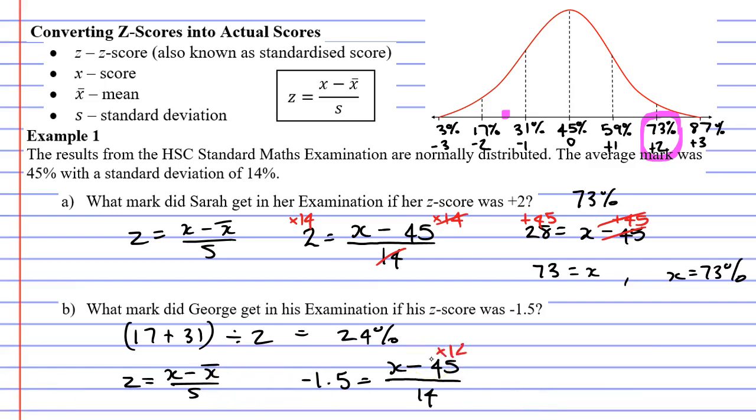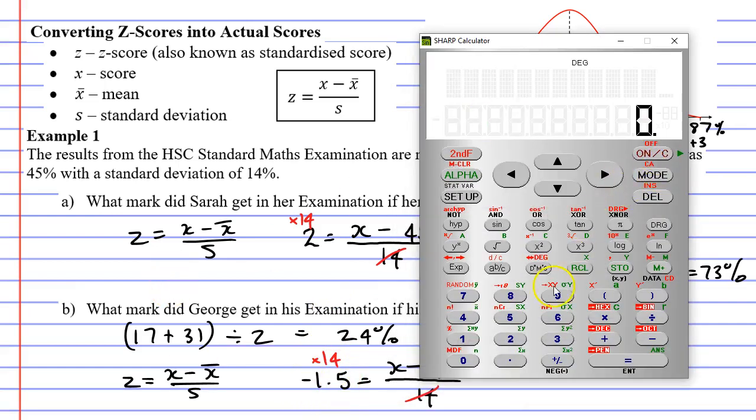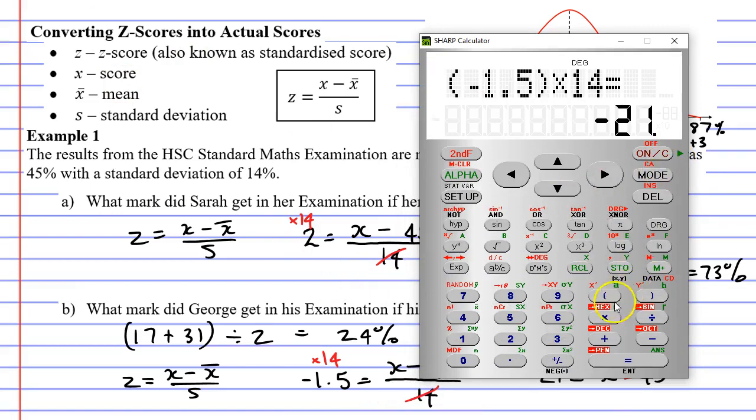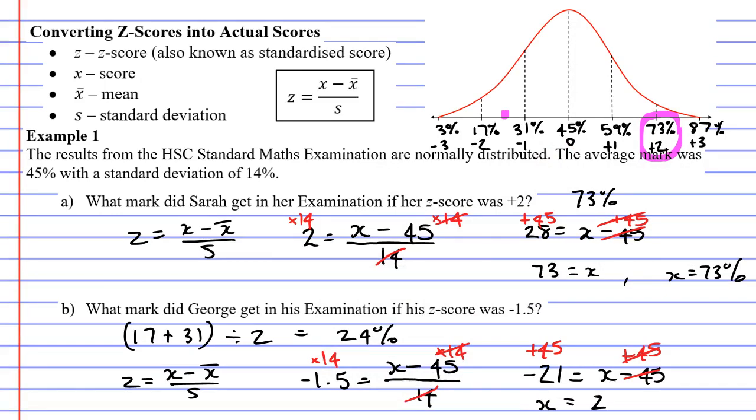I'm going to start by multiplying both sides by 14 to cancel the 14 at the bottom. Negative 1.5 times 14 gives me negative 21. So on the left, I have negative 21. And then on the right, I have x minus 45. And what I want to do here is add 45 to both sides, which will cancel out the 45 on the right. And negative 21 plus 45 gives me 24. So x equals 24%, which is exactly the same as what I got before. George got a mark of 24% in his exam.